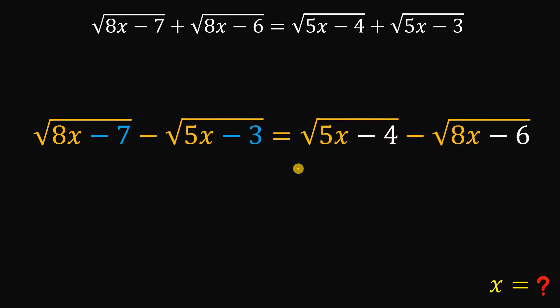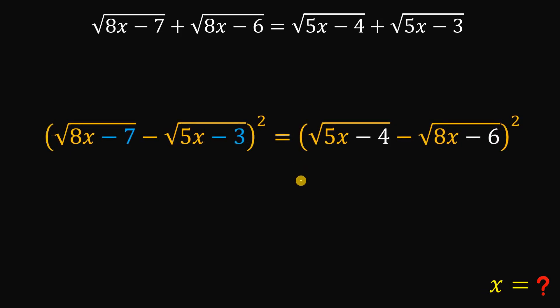And that is the time to square on both sides. And here's the result. Because if we square on both sides, we get something like 8x minus 7, this one, minus 2 times the product of these two expressions. So we have 8x minus 7 times 5x minus 3. Then square root of 5x minus 3 squared, we have 5x minus 3. And on the right-hand side, we have 5x minus 4 minus 2 times the product of 5x minus 4 and square root of 8x minus 6 plus 8x minus 6.